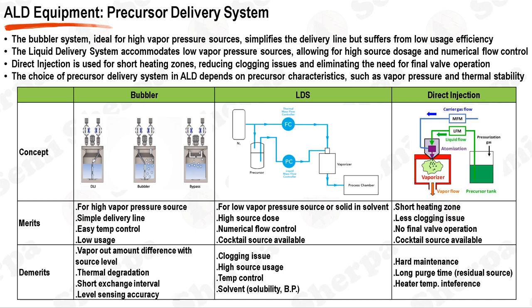Lastly, direct injection is another method used in precursor delivery, especially useful when short heating zones are necessary. This system is less prone to clogging issues and doesn't require final valve operation. It can also handle cocktail sources. On the downside, it can be difficult to maintain, and the long purge times due to residual source can be a problem. Furthermore, there can be interference from heater temperatures. Overall, the choice of precursor delivery system in ALD is a critical decision based on the specific requirements of the deposition process and the nature of the precursors used.